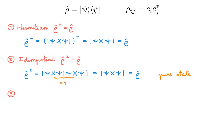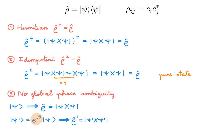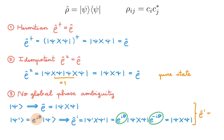A third interesting property of the density operator is that there is no global phase ambiguity. Consider state ψ — the corresponding density operator ρ equals the outer product of ψ with itself. Now consider another state ψ' which equals e^(iθ) times ψ. We know that multiplying a state vector by a global phase like this doesn't affect any physical predictions, so we always have this phase ambiguity when working with state vectors. If we construct the corresponding density matrix ρ', we get e^(iθ) times the outer product of ψ with ψ times e^(-iθ). The two exponentials combine to give 1, so we get ρ' = ρ. So there is no global phase ambiguity when working in terms of the density operator.